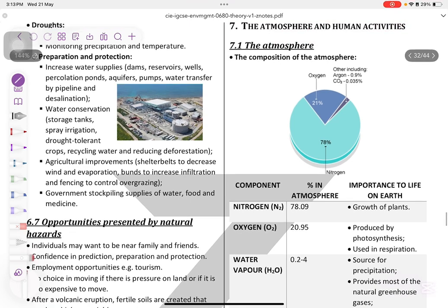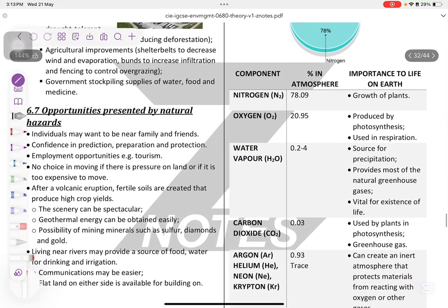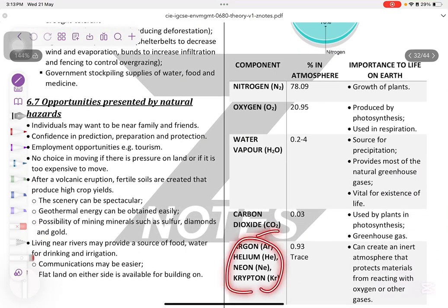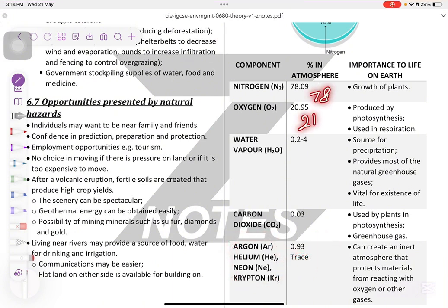First thing you need to know is the composition of the atmosphere. It's made of nitrogen, oxygen, water vapor, carbon dioxide, and other gases. You don't have to know the names of these gases. You can just say other gases. Nitrogen is 78%, oxygen is 21%, water vapor is 0.4, and carbon dioxide is 0.04. Don't forget to add the percentage.